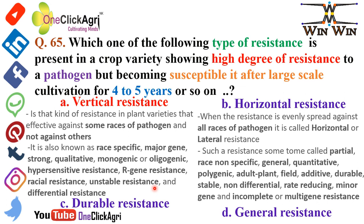Horizontal resistance is when resistance is evenly spread against all races of the pathogen — compared to vertical resistance which is against some races only. Horizontal resistance is also called lateral resistance. Other names include: partial resistance, race non-specific resistance, general resistance, quantitative resistance, polygenic resistance, adult plant field resistance, additive, durable, stable, non-differential, rate-reducing, minor gene, and incomplete or multigene resistance.